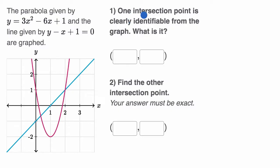The first thing they ask us is: one intersection point is clearly identifiable from the graph, what is it? They want us to put it in here. This is a screenshot from the exercise on Khan Academy, but I'm just going to write on it. Pause this video and see if you can answer this first part.